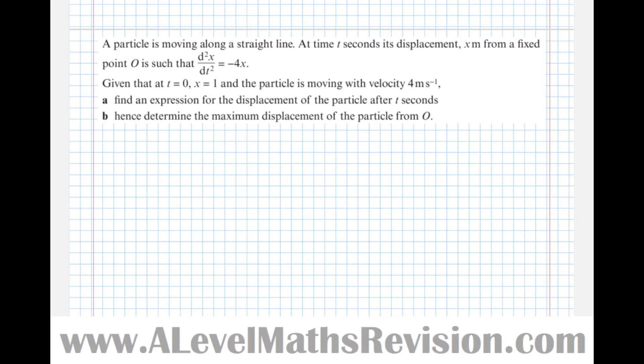This one isn't so simple. We've got d2x by dt squared, which I find easier to write in dot notation as x double dash. Rearranging we get x double dash plus 4x equals 0. We're trying to find an expression for displacement, so we're going to solve this as a second order differential equation.